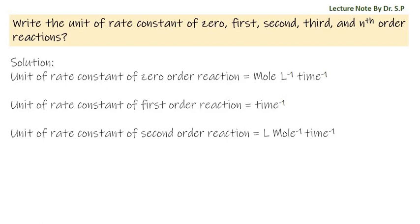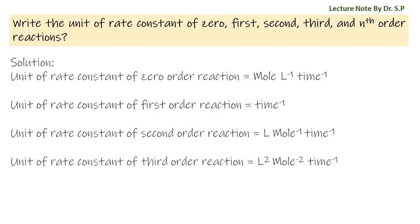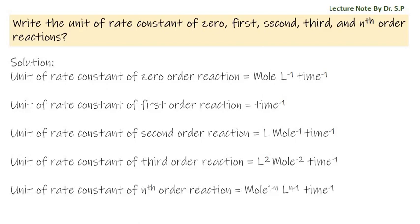...liter per mole per time. The unit of rate constant of third order reaction is liter squared per mole squared per time. The unit of rate constant of nth order reaction is mole to the power (1 minus n), liter to the power (n minus 1), per time.